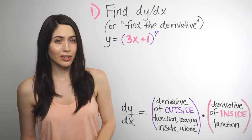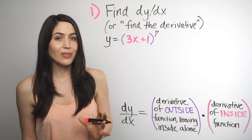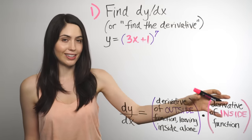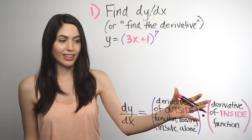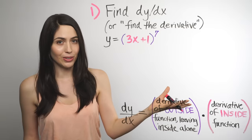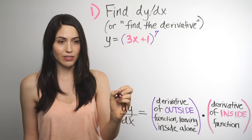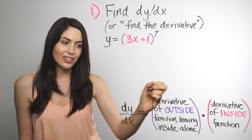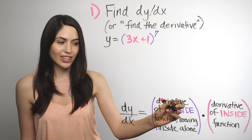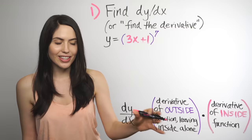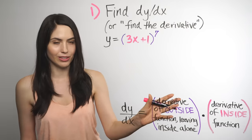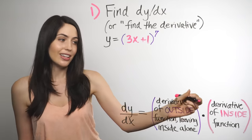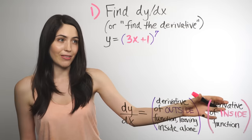The name 'chain rule' is a little cryptic as to what to do, but thankfully it has another name: the outside-inside rule. That tells you exactly what to do. To find the derivative dy/dx or y prime, you take the derivative of just the outside function first, and leave the inside part as is — untouched. And then after that you multiply by the derivative of just the inside function.